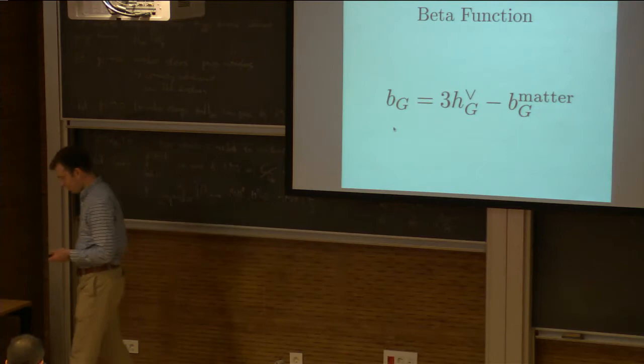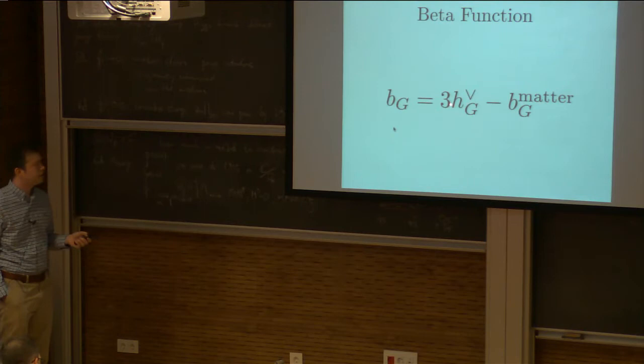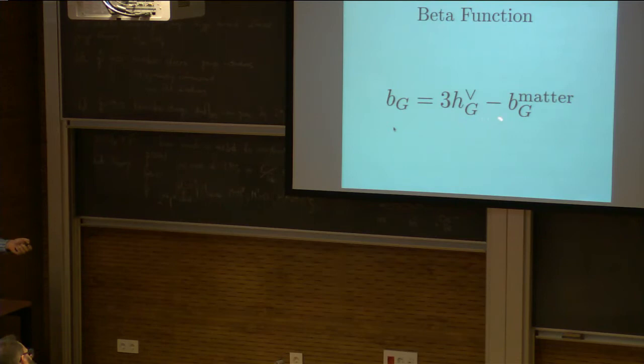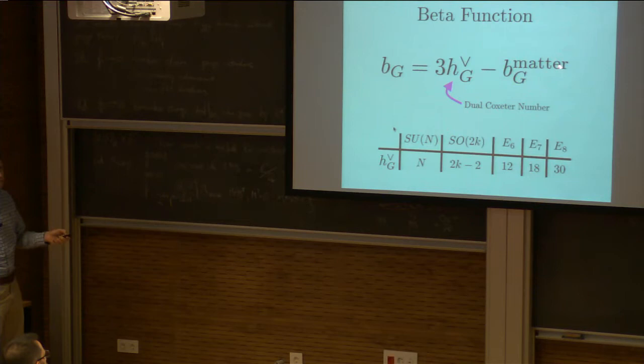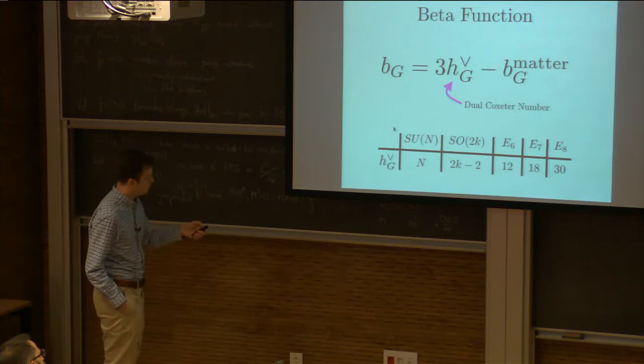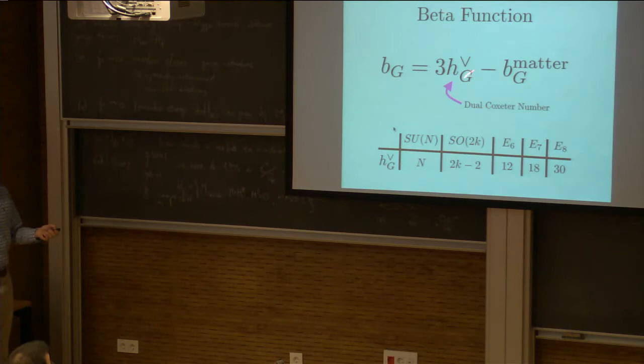What's the beta function for this gauge theory? It's three times the dual Coxeter number minus some contribution from matter. In the case of an SU(N) gauge group it's just 3N minus some stuff. For the other ADE groups you get various nice numbers. I just wrote it for the ADE list — you can obviously do this for all of them.